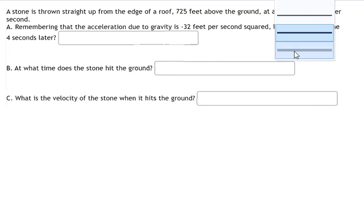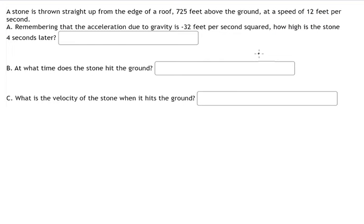Hello everybody. Today I want to talk about physics and calculus. I want to show you how to answer a problem where a stone is thrown from the edge of a roof 725 feet above the ground at a speed of 12 feet per second. We know that the acceleration due to gravity is about negative 32 feet per second squared. Now I want to show you how to answer this, so we need to apply the formula.